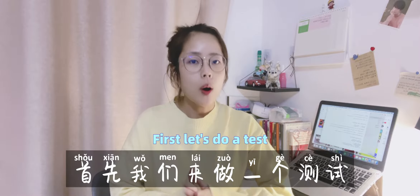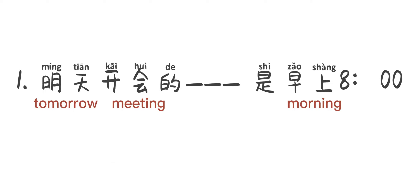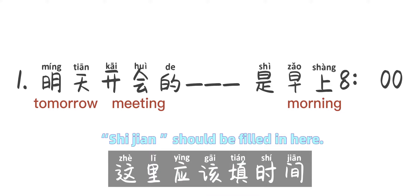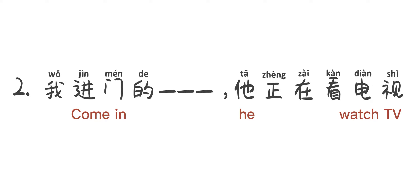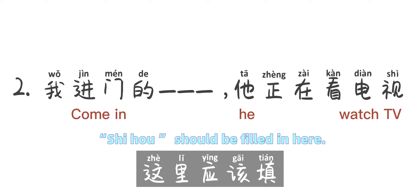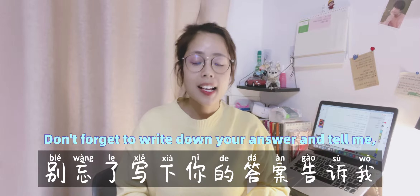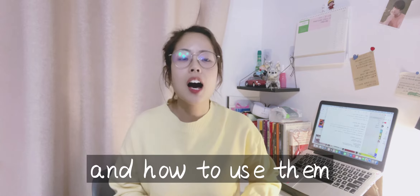First of all, let's do a test. Let's see — if you are not going to open the meeting tomorrow, what is at 8 o'clock in the morning? 这里应该填时间。我进门的什么？他正在看电视。这里应该填时候。你们都做对了吗？别忘了写下你的答案告诉我。Now let's talk about the difference between these two words and how to use them.